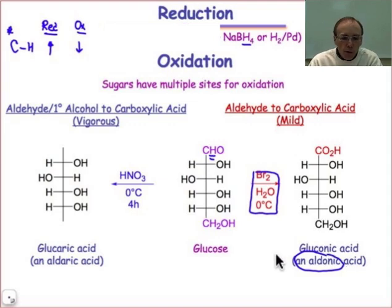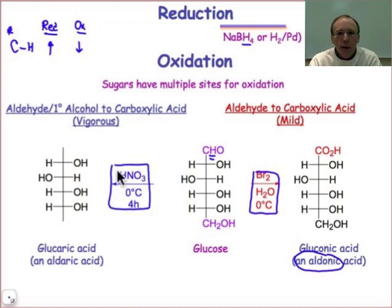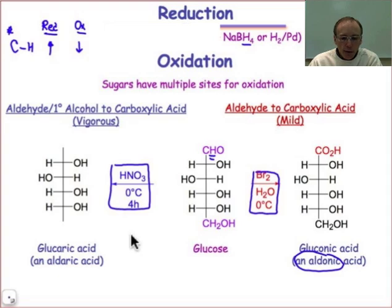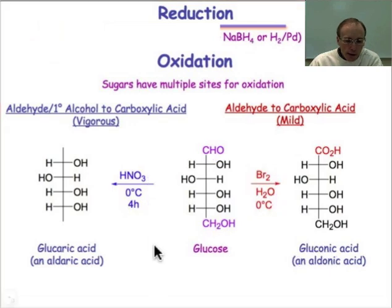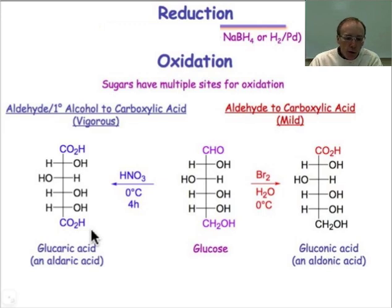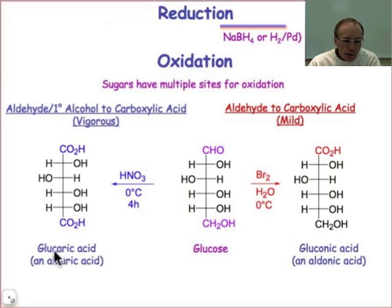Under more forcing conditions — nitric acid at 0°C for about 4 hours — both C1 and C6 can be oxidized, with a loss of hydrogens at C6 also to make the carboxylic acid, giving us the diacid. For glucose, that's known as glucaric acid, but for any aldose in general, that's known as an alderic acid.